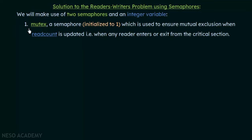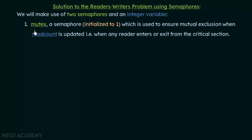The solution uses two semaphores and one integer variable. The first semaphore is mutex — a binary semaphore initialized to one — used to ensure mutual exclusion when the read_count variable is updated, that is, when any reader enters or exits the critical section. No two processes should try to modify read_count at the same time, which is why we use this mutex semaphore.